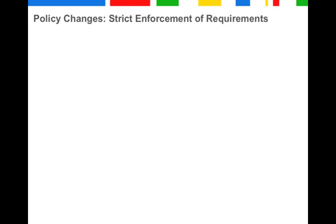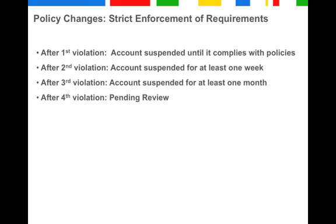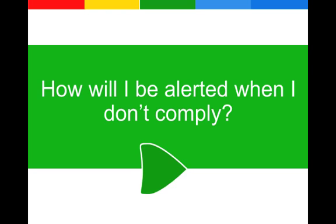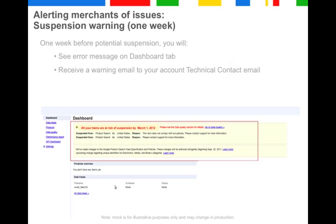We strictly enforce these requirements starting September 22nd. After the first violation, your account will be suspended until it complies with our policies. After the second violation, your account will be suspended for at least one week, and after the third violation, the account is suspended for at least one month. How will you be alerted when you don't comply? One week before a potential suspension, you will see an error message on the Dashboard tab and receive a warning email to your account's technical contact email address, so make sure this is updated under Settings > General. Then you'll have one week to resolve the issue and avoid suspension.